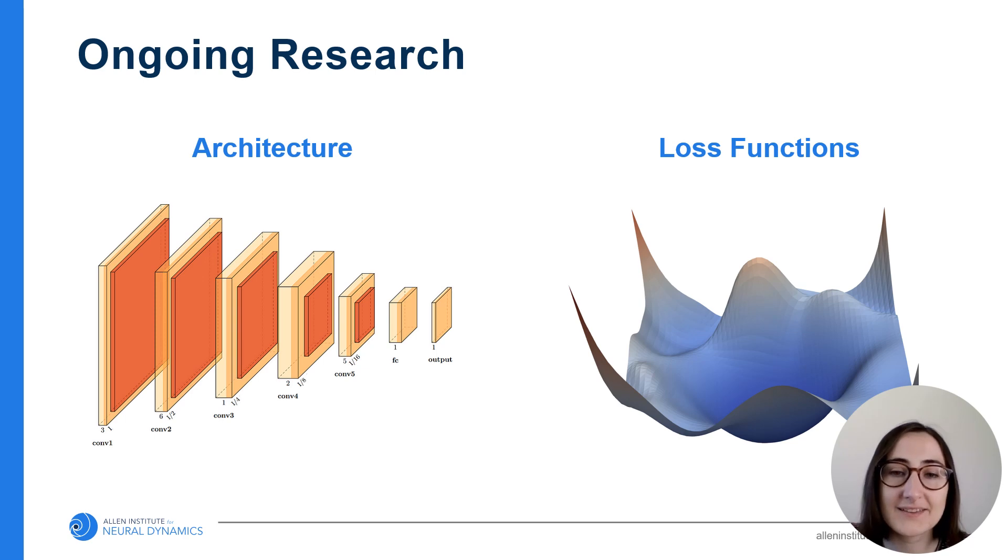The loss function is one area I've been working on. We've been exploring topological loss functions, which highly penalize topological mistakes that the neural network may make. We found that this can help reduce the number of mistakes our network makes.